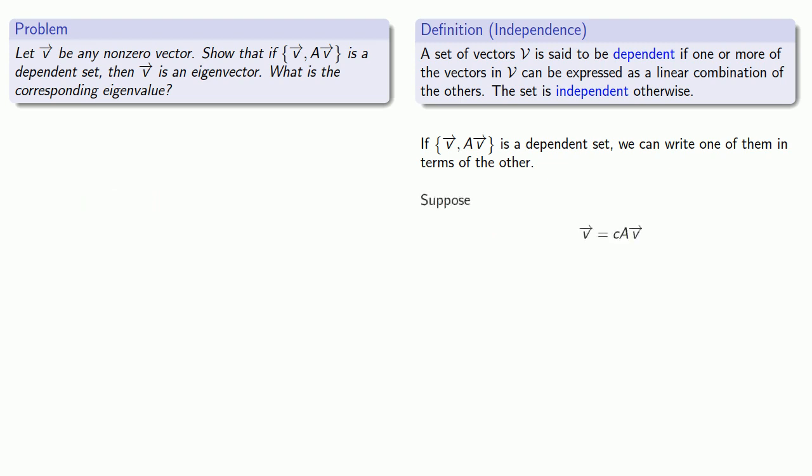So suppose our vector v is c times the other vector Av. If c is equal to 0, our vector v is also equal to 0, but that's not true. We've been assuming that v is a non-zero vector. So c can't be equal to 0, and so we can divide: one over c times v is equal to Av.